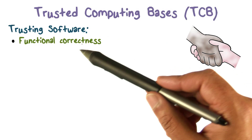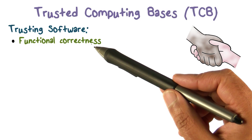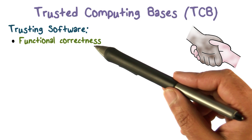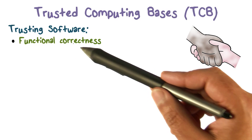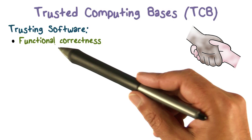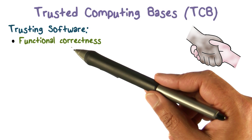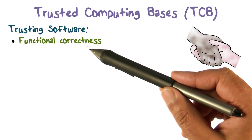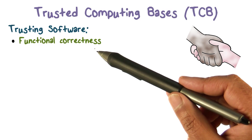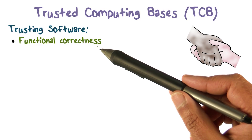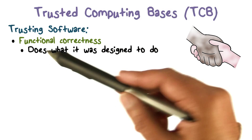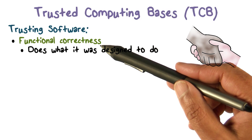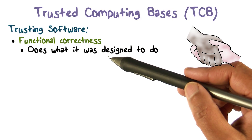The software is supposed to perform a set of functions. We've been discussing some of those — recently access control or policies that are supported and so on. If it's going to implement certain functionality, it has to be functionally correct. When it says it implements a certain model, it implements that model correctly. Functional correctness basically means that it does what it was designed to do — it implements a set of functions and that is done correctly.